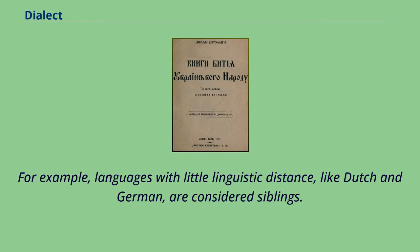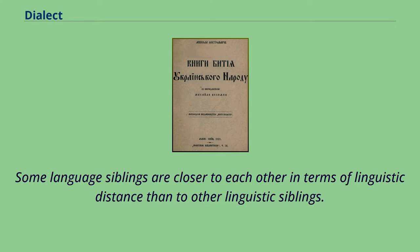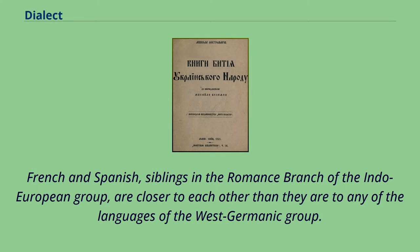Linguistic distance may be used to determine language families and language siblings. For example, languages with little linguistic distance, like Dutch and German, are considered siblings in the West Germanic language group. Some language siblings are closer to each other than to other linguistic siblings — French and Spanish, siblings in the Romance branch of the Indo-European group, are closer to each other than they are to any of the languages of the West Germanic group.